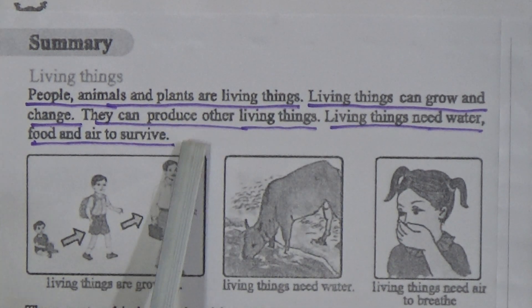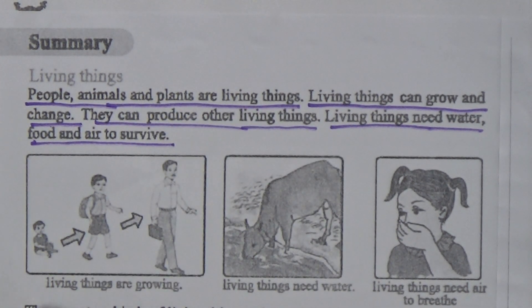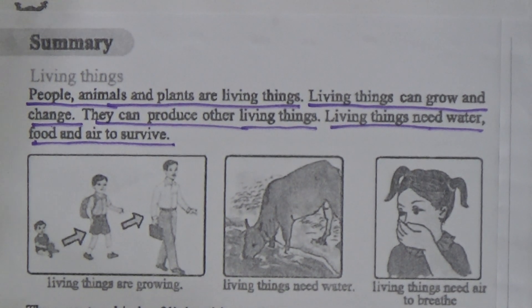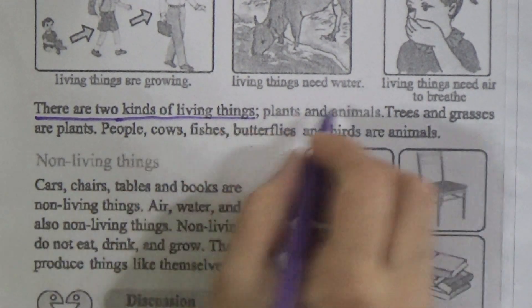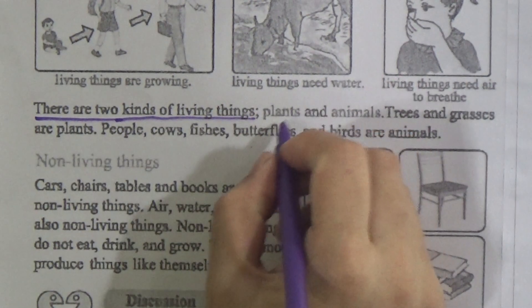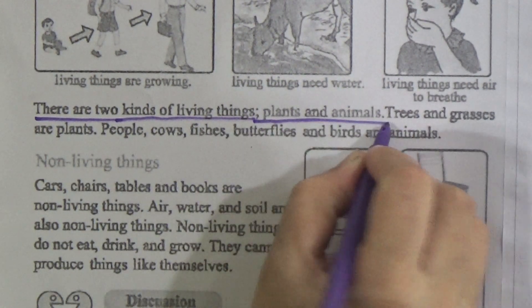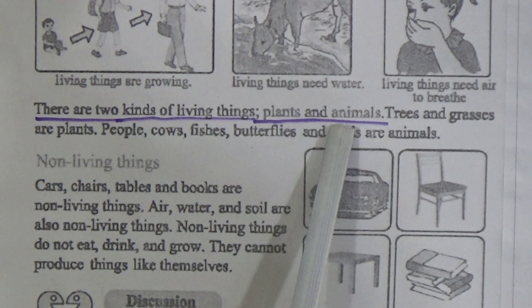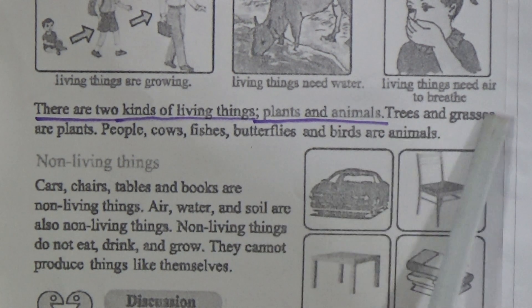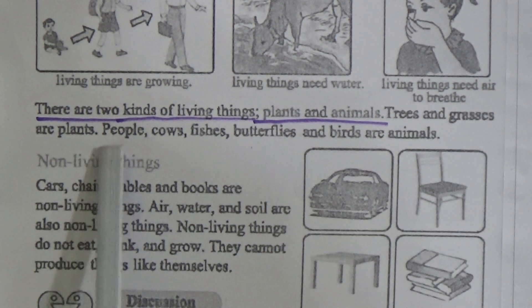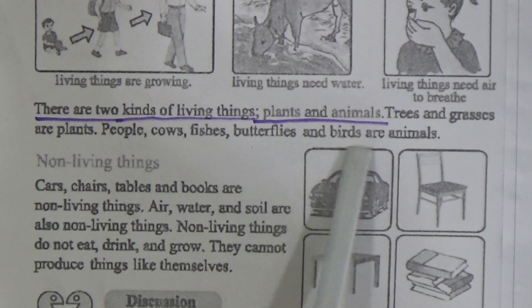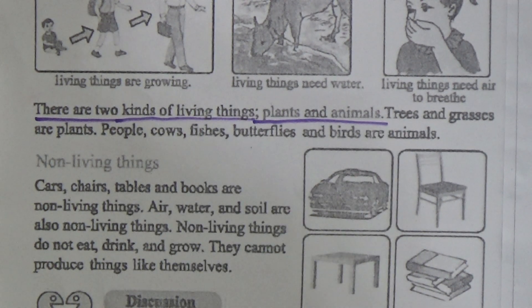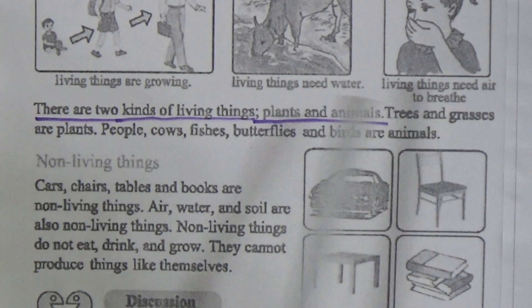There are two kinds of living things: plants and animals. Trees and grasses are plants. People, cows, fish, butterflies and birds are animals. These are the examples of animals.